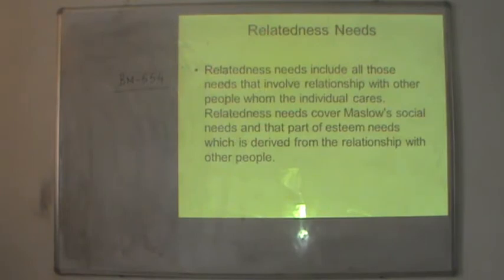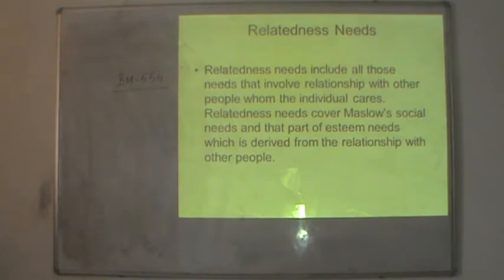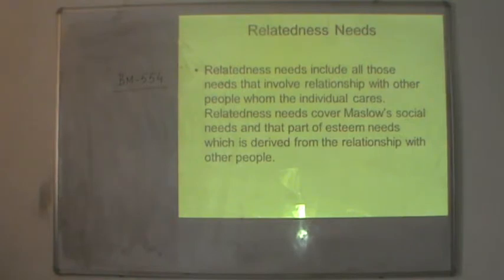The second is relatedness needs. It includes all those needs that involve relationships with other people the individual cares about. Relatedness needs cover Maslow's social needs and that part of esteem needs derived from relationships with other people — what we call external esteem needs. So basically here we have social needs plus external esteem needs which are derived from people around you, giving a person that status.